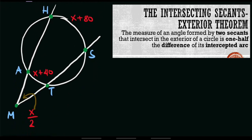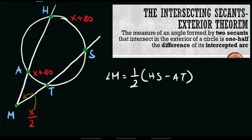Let's try to solve another problem. For example, we have this given circle wherein the value of our exterior angle is x over 2. The value of our first intercepted arc is x plus 40 degrees, and the bigger one is x plus 80 degrees. Let's solve for the value of x using the same procedure. We will use the formula: the value of angle M is equal to half of its intercepted arcs — HS as our first arc minus our second intercepted arc.